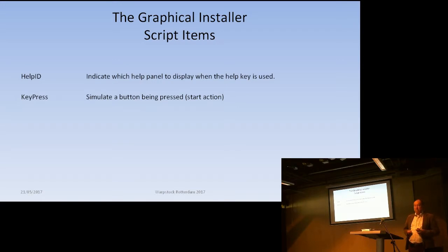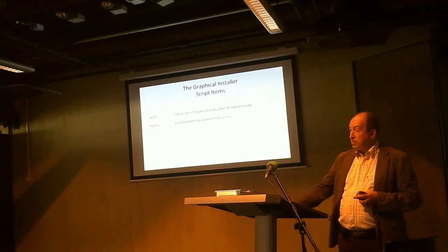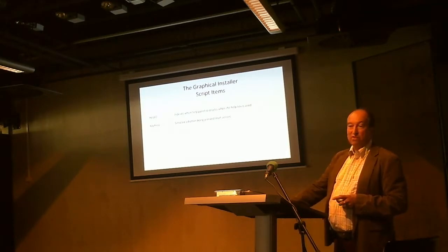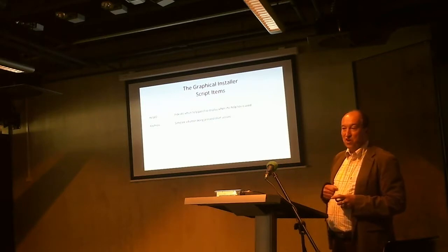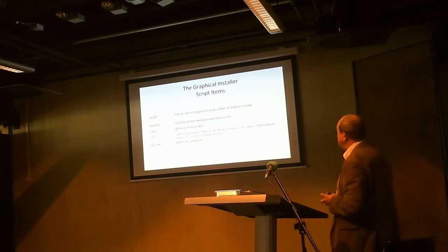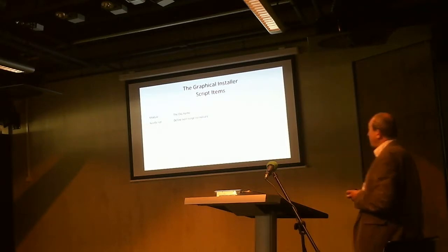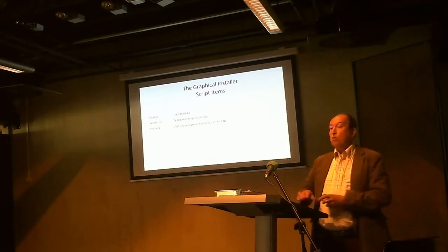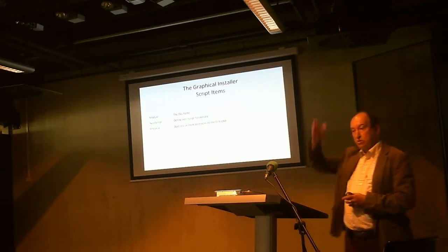So if you find anywhere on the installer that the help file is either not found or gives an error, that's because somebody put in the wrong ID — simple as that, it's just a reference. One of the things that is always in the script file is the module name — it has to know the layout of the page, so you have to tell it which DLL you're using. Also 'next script': when you press the next button, which is the next script to use, it just follows sequentially. The next script is not necessarily only one item but can be more, depending on what you've selected.